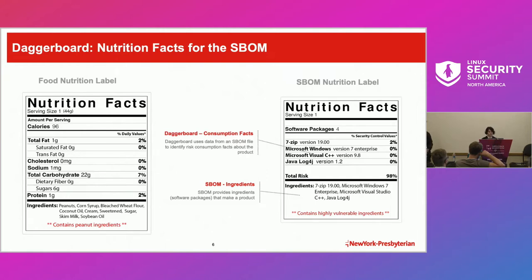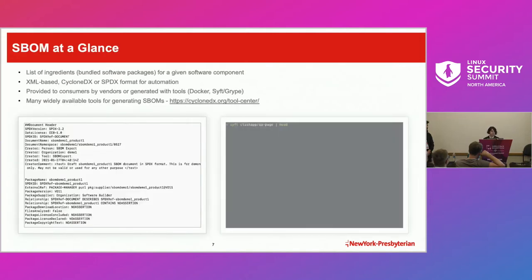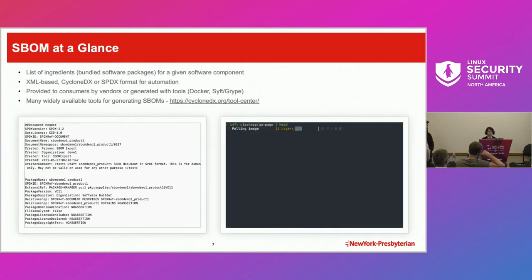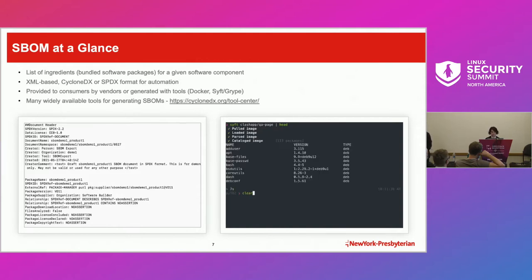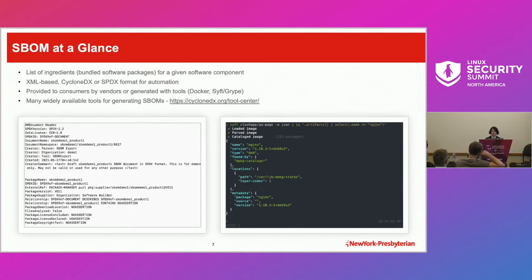Daggerboard takes the SBOM, parses the results, and then gives us a risk assessment. We can use the results from Daggerboard to determine: do I really want to put this on my network? Do I want to consume this risk? The SBOM file is XML-based; there are two supported formats, CycloneDX and SPDX. You might be wondering how to get your hands on an SBOM file — there are a few common scenarios.